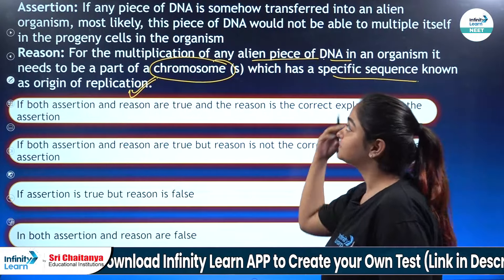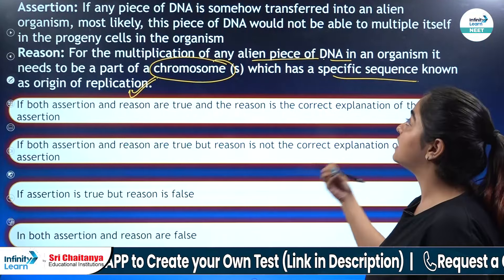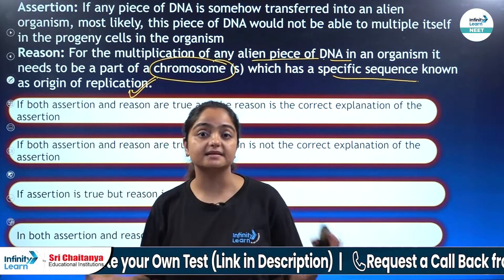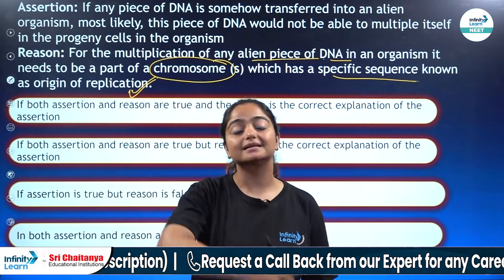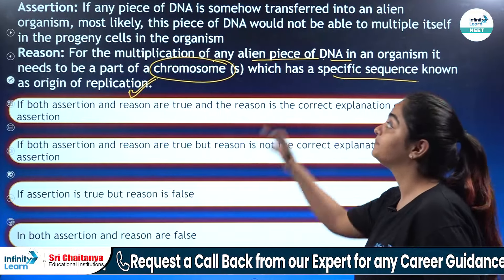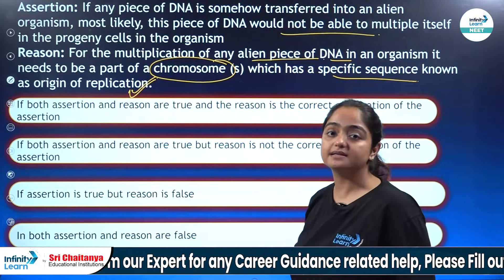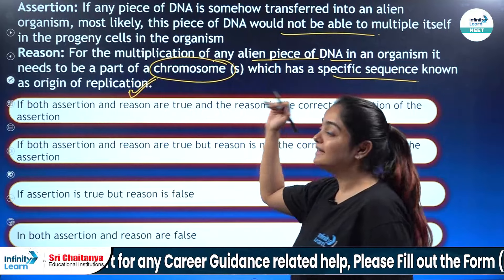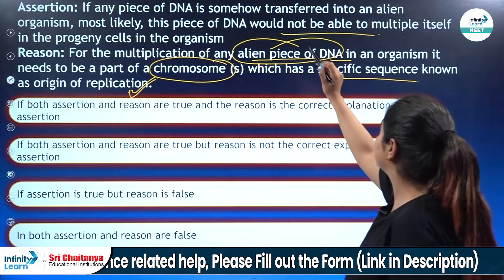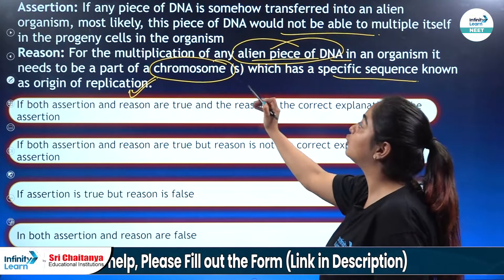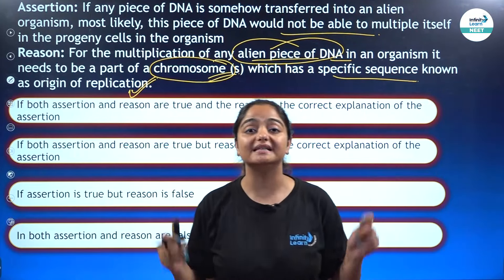Looking at the assertion again — we are talking about any piece of DNA if we transfer it into an alien organism, which means that organism was not having this piece of DNA. So this piece of DNA will act as a foreign DNA for that particular organism. This piece of DNA would not be able to multiply itself in the progeny cells, which is absolutely correct. For the multiplication of any alien piece of DNA, it needs to be part of the chromosome with a specific sequence known as origin of replication — and that's what we study in recombinant DNA technology.